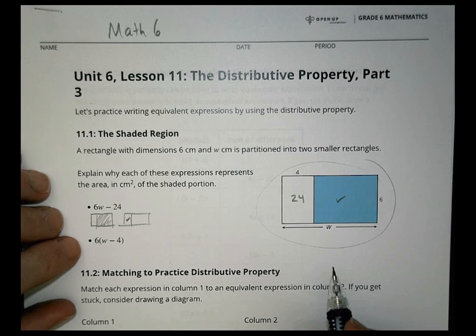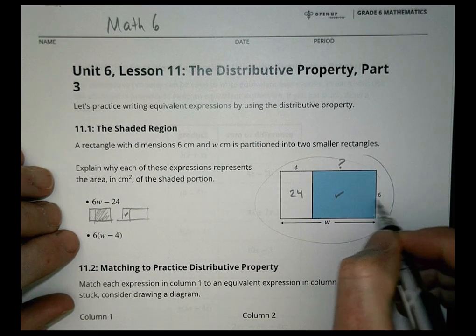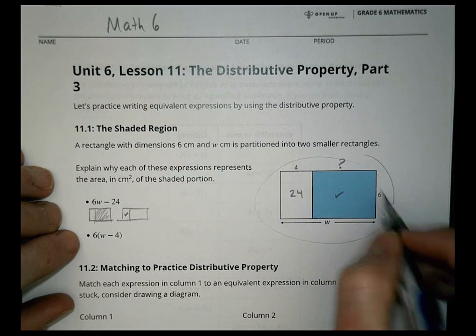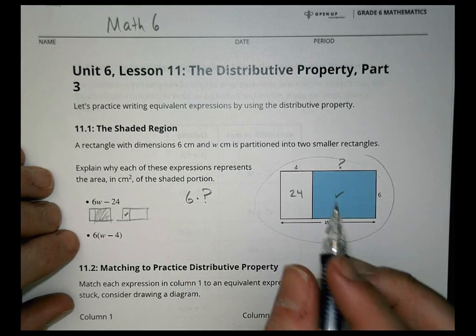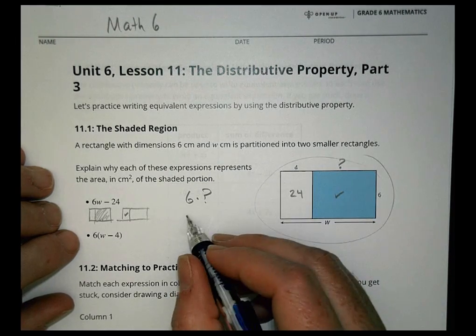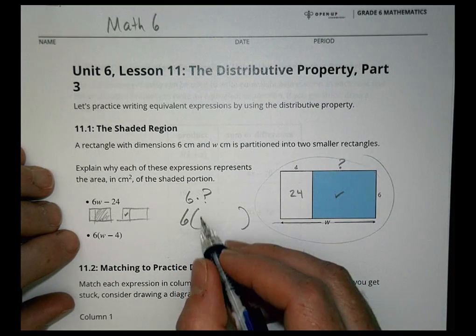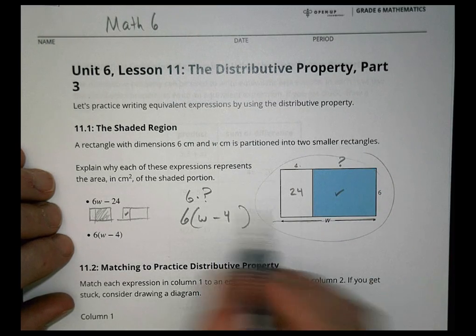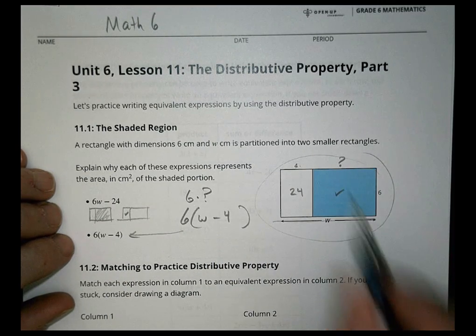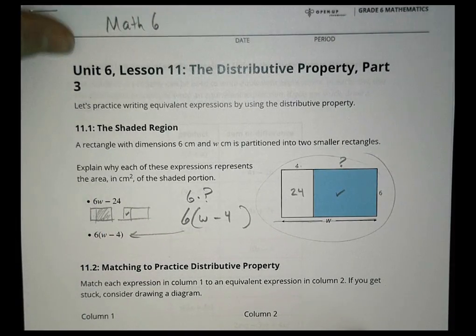Another way of thinking about it with the distributive property is 6 times an unknown. To find that question mark, the value is the whole length w and then take away 4. So that's where this one comes from, 6(w-4). That's a review of what we've been looking at with distributive property in the previous lessons.